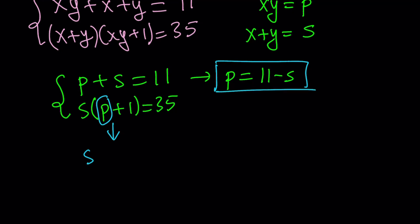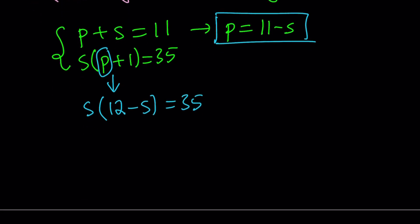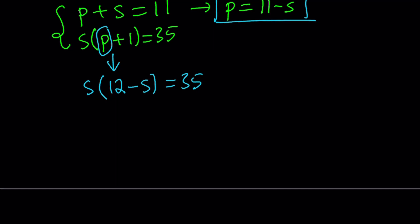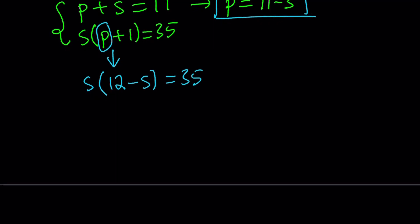And that means I multiply s times (p+1), which is (12-s). And this gives us a quadratic equation in a single variable, which is s in this case. So let's go ahead and distribute and solve this equation. 12s - s² = 35. Let's put everything on the positive side. s² - 12s + 35 = 0.